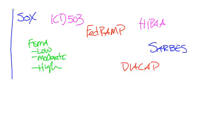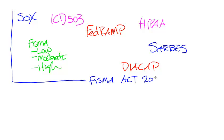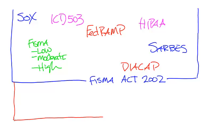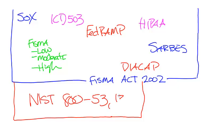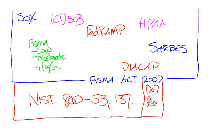Many of them have their genealogy dating back to the FISMA Act of 2002. Many of them spawn from that era, and they're all built — almost all of them — aligning even closer in 2013 to NIST 800-53, 137, FIPS 140-2, and other standards that make up this FISMA Act and these certifications.